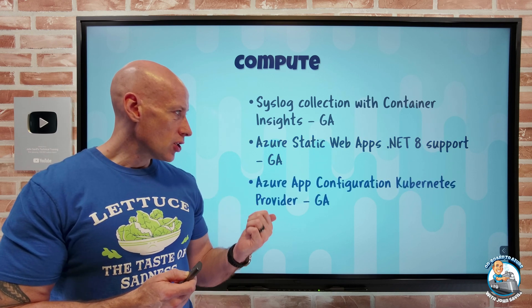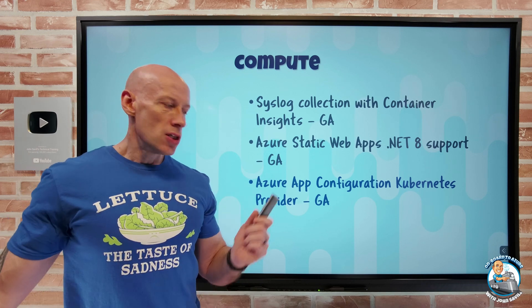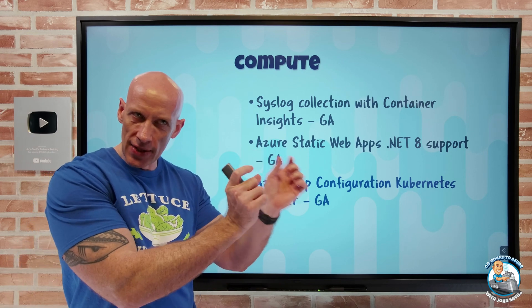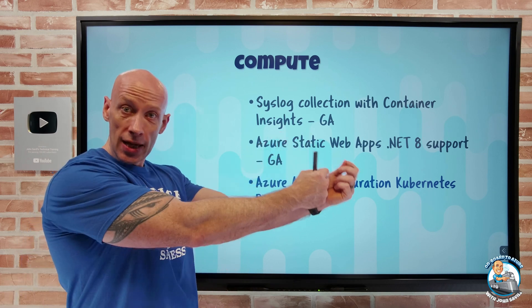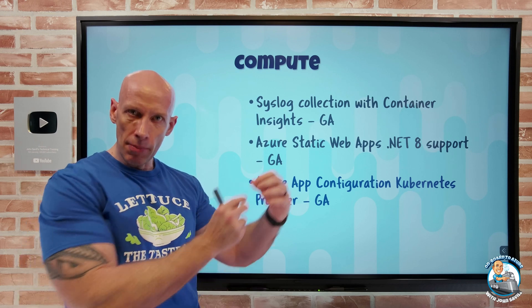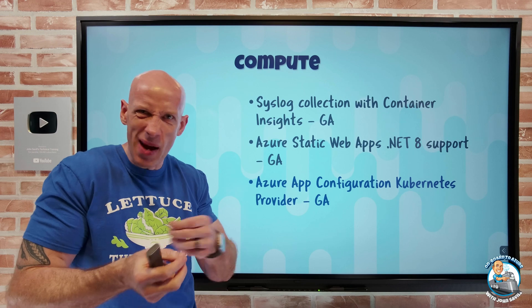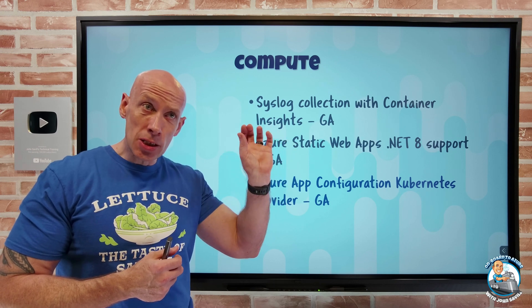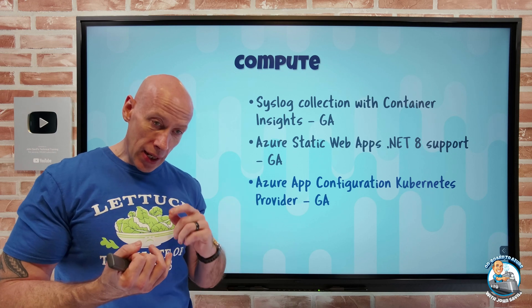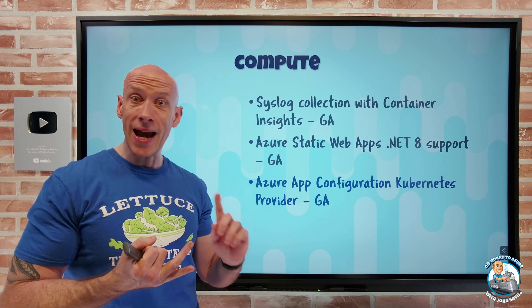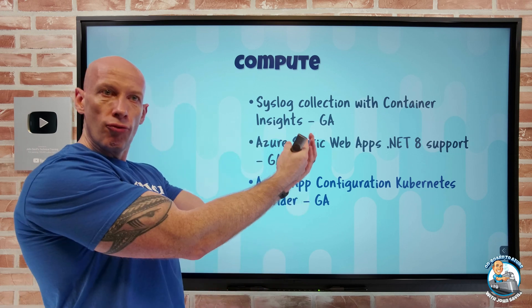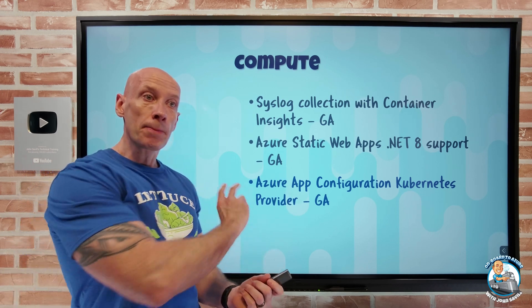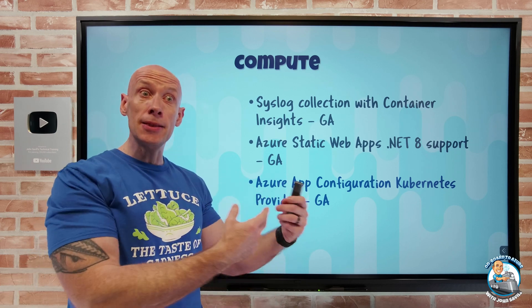Azure App Configuration now has a Kubernetes provider. Azure App Configuration is all about a centralized store for the configuration of your services — think key-value pairs of data, which can include references to Azure Key Vault if you have secrets. This enables you to separate configuration from an actual app instance. Now with this provider, you can automatically expose that configuration into your pods, including config maps and secrets for referenced Azure Key Vault values, making it much easier to integrate with AKS and Kubernetes-based applications.